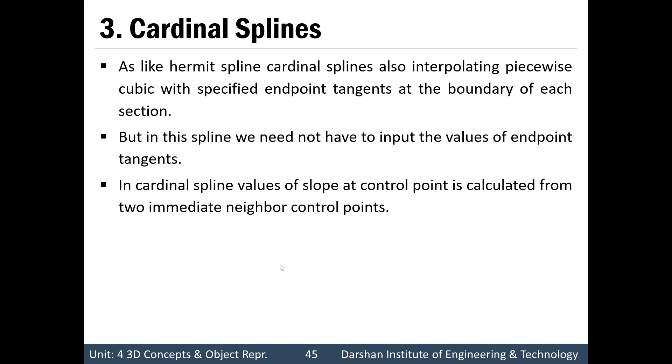In cardinal spline, value of slope at control point is calculated from two immediate neighbor control points. So here we are going to use four control points for calculating equation of this particular curve section. One control point is previous to the first control point and one control point is after the last control point.